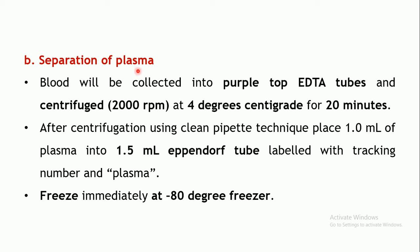For plasma separation, blood is collected in purple top EDTA tubes and centrifuged at 2000 rpm at 4 degrees Celsius for 20 minutes. Using a clean pipette, 1 ml of plasma is stored in 1.5 ml Eppendorf tubes labeled appropriately with a tracking number and labeled as plasma, then immediately freeze-dried at minus 80 degrees in the freezer.